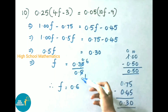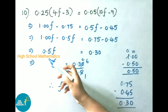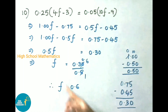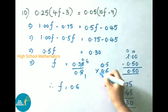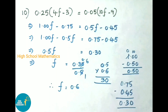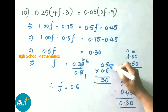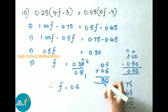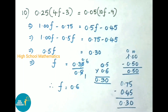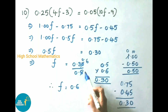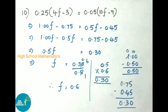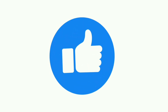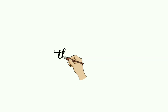Now 0.5f equals 0.30, so f equals 0.30 by 0.5. Here 0.5 is multiplying, so transposing it becomes dividing. 0.5 times 0.6 is 0.30, so f equals 0.6. Today we have seen Class 8 Chapter 2 Exercise 2.5, questions 7 to 10, completing Exercise 2.5. Hope you all like this video. If you like this video, please like, share with your friends, and subscribe to our channel. Thank you for watching.